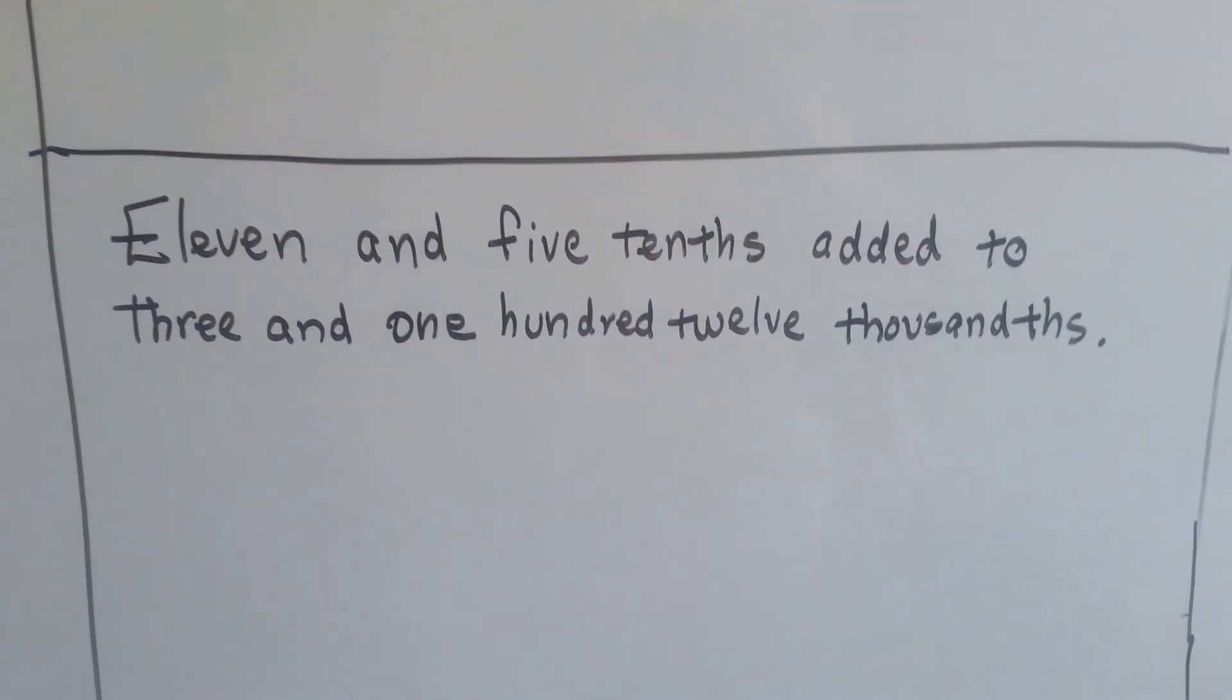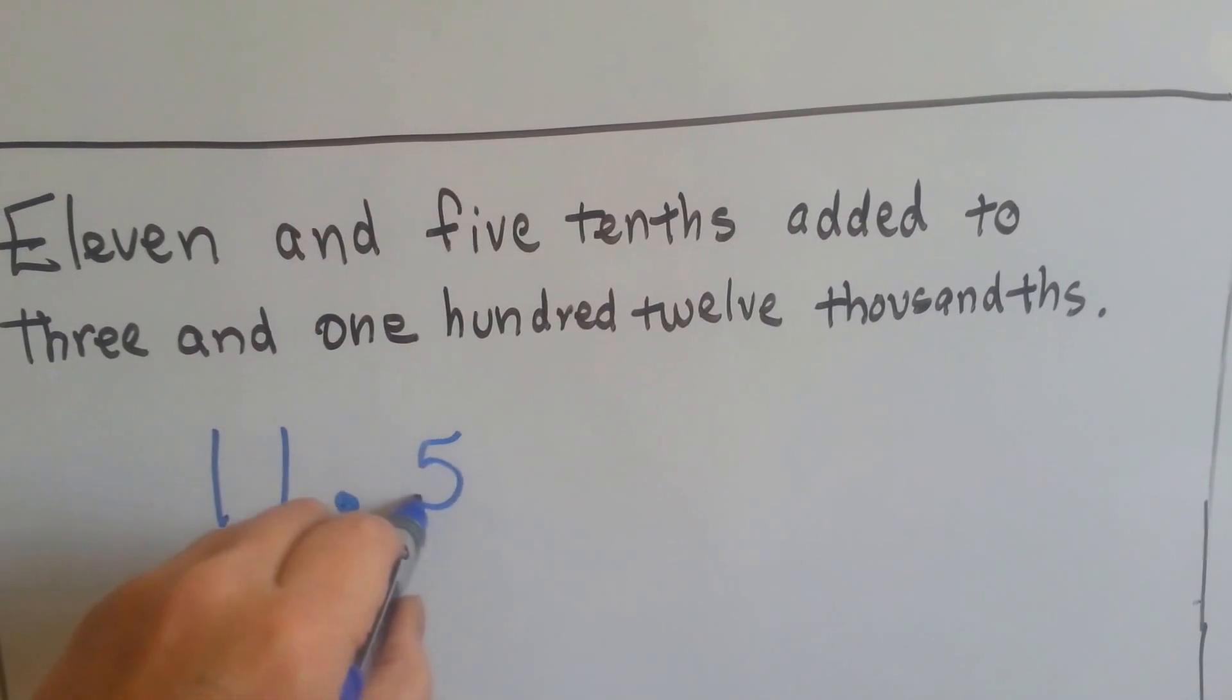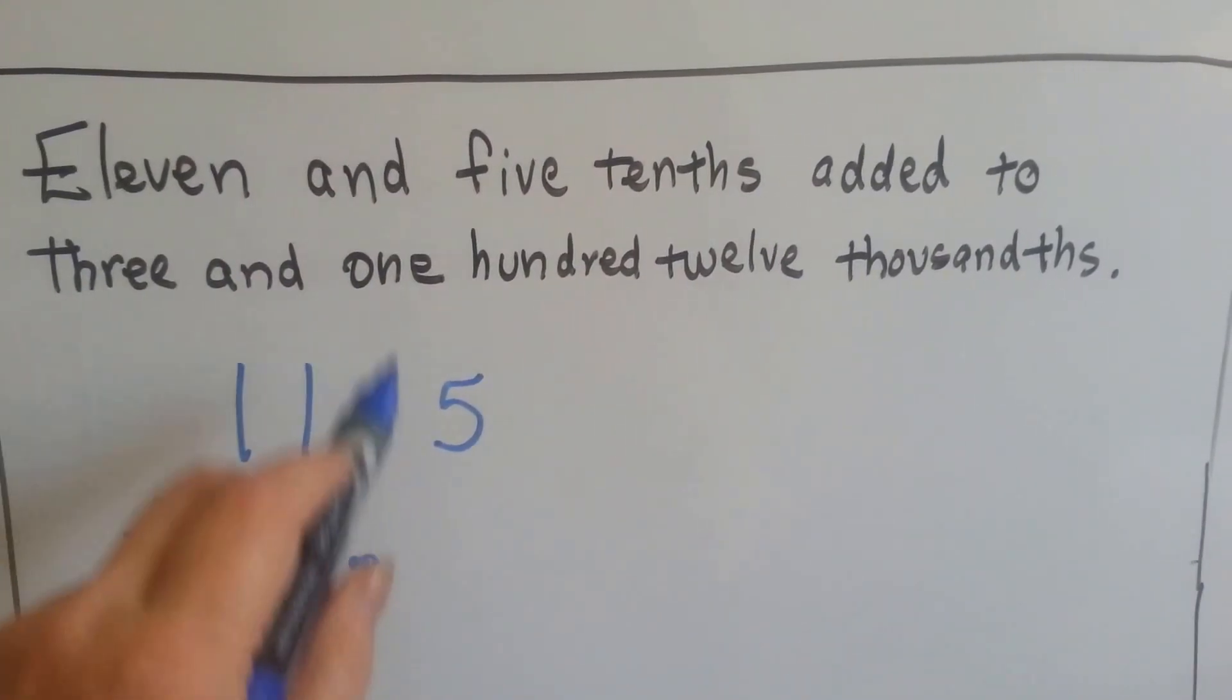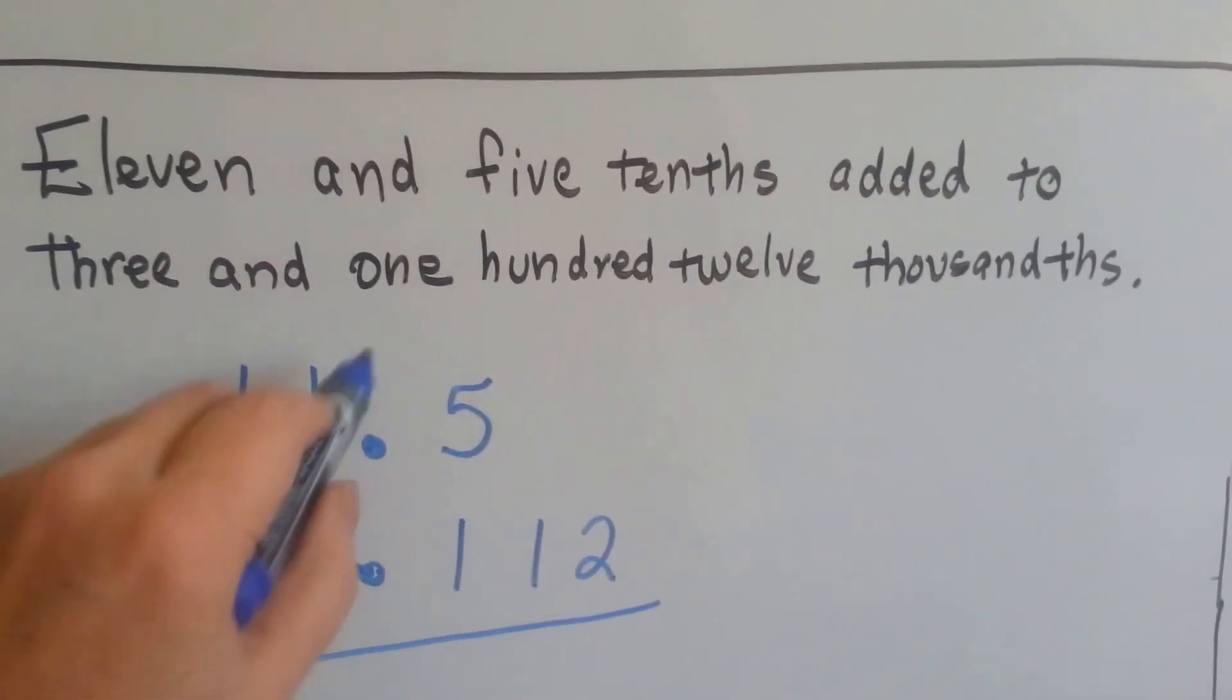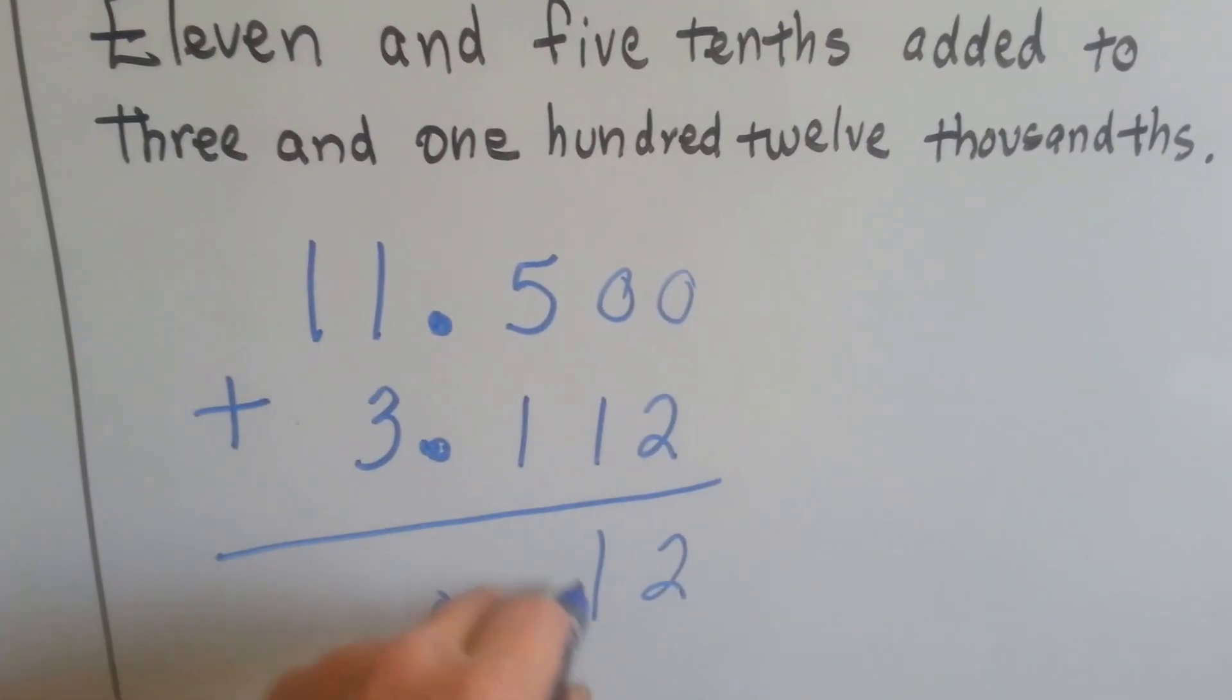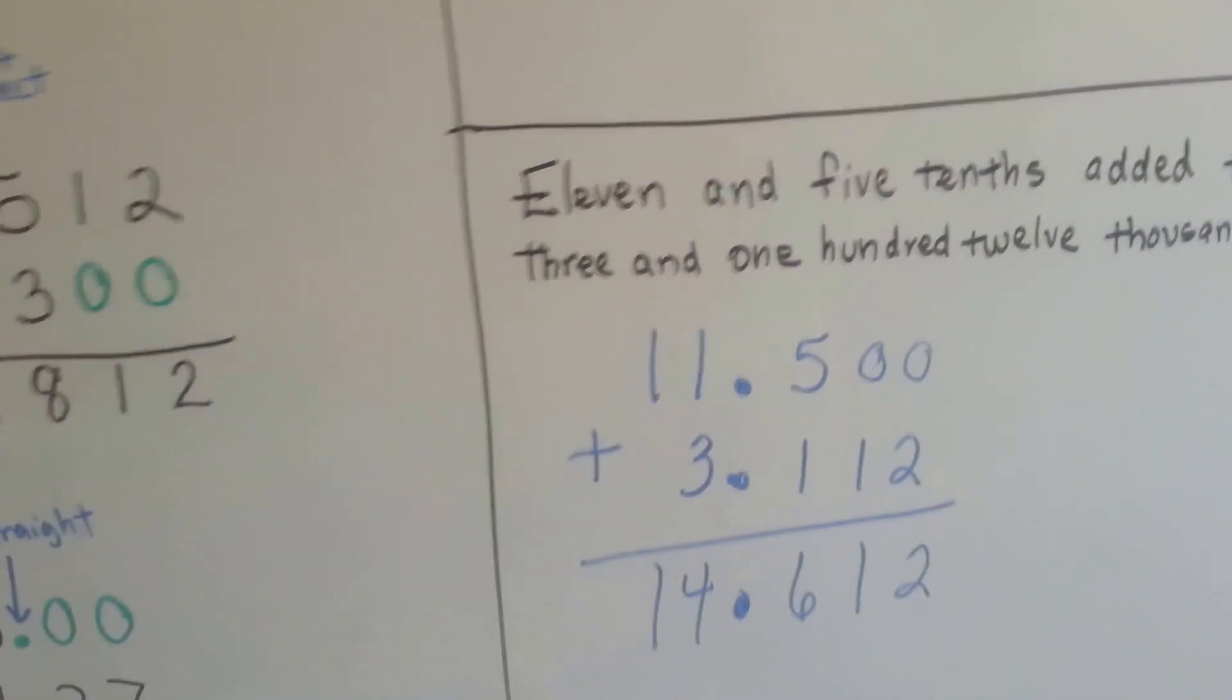11 and 5 tenths added to 3 and 112 thousandths would be 11 and 5 tenths added to 3 and, and, that's the decimal point is and, 112 thousandths. We make sure our decimal points are all lined up all nice and pretty. We can put in our invisible zeros if we want. We've got 2, we've got 1, we've got 6, we've got 4 and a 1, and we've got 14 and 612 thousandths.